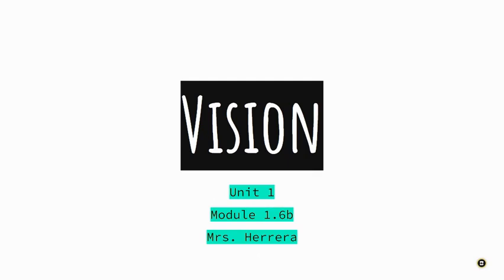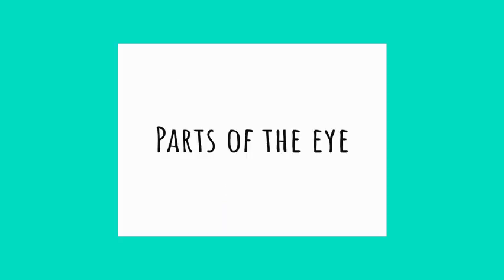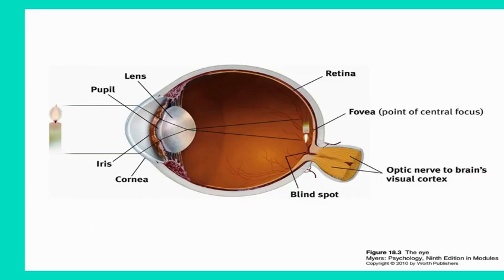Welcome to our next video lecture. We are still in unit one, the sensation and perception portion. Today we are focusing on module 1.6b, which is all about vision. We're going to start first with just the parts — we're going to look at the anatomy: what is each part of the eye, and what does each of those parts do?